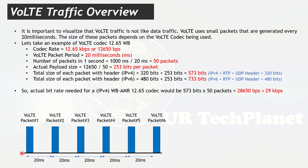The VoLTE packet periodicity is 20 milliseconds: the first packet is generated, then the next 20 ms later. This means the number of packets in one second is 1000 ms ÷ 20 = 50 packets. So any VoLTE codec will generate around 50 packets per second.